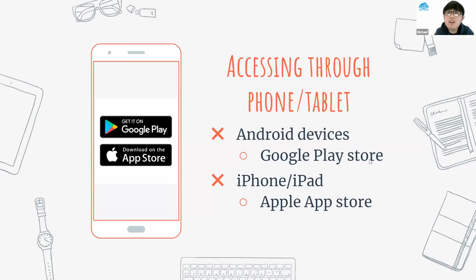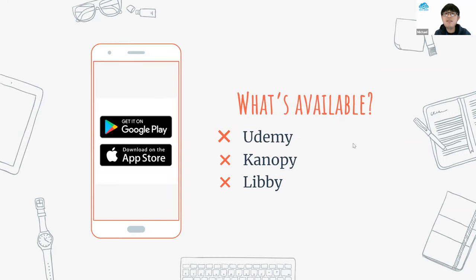Some of these platforms can be accessed through your phone or tablet. For Android devices, go to the Google Play Store and download the app. For iPhone or iPad, go to the Apple App Store and search for the appropriate app. Not all platforms have an app — right now there is an app for Udemy, Canopy, and Libby. The other platforms do not have an app yet.